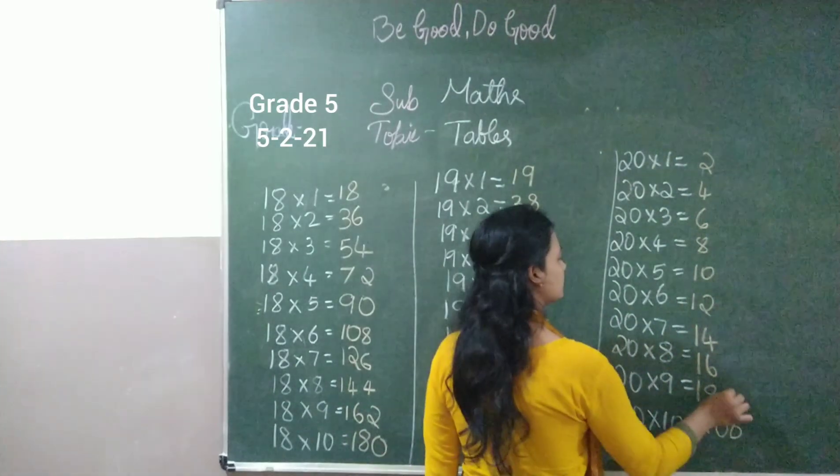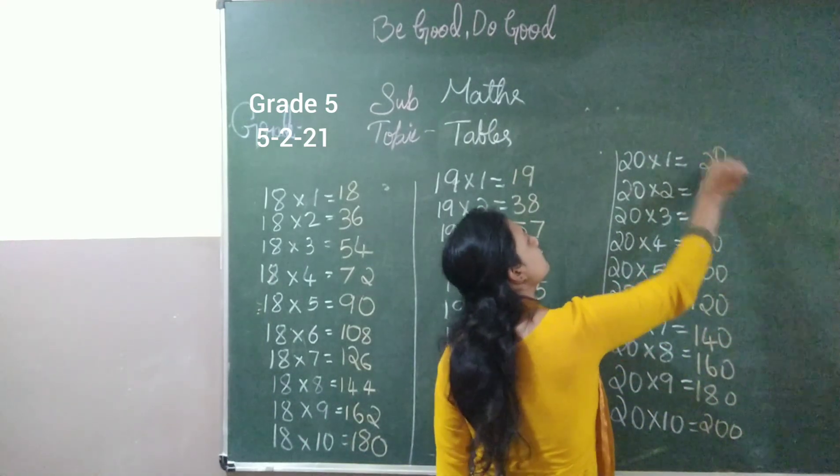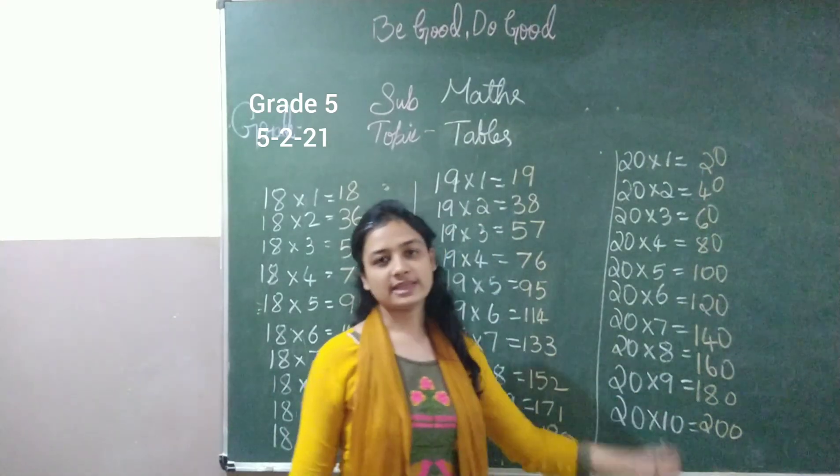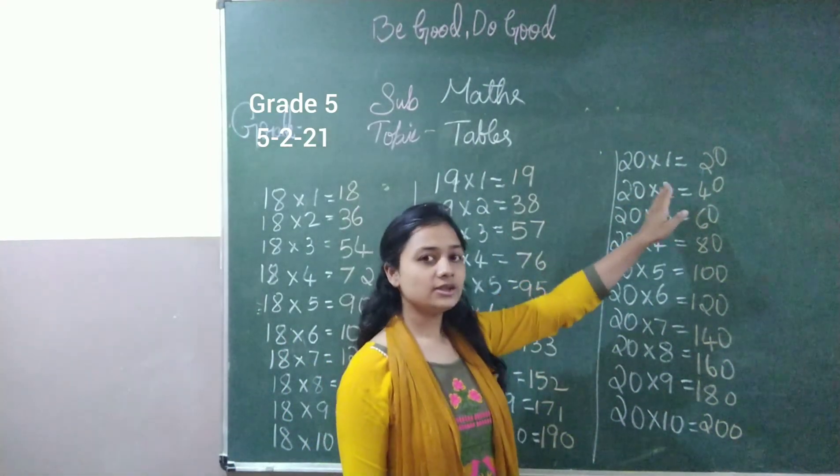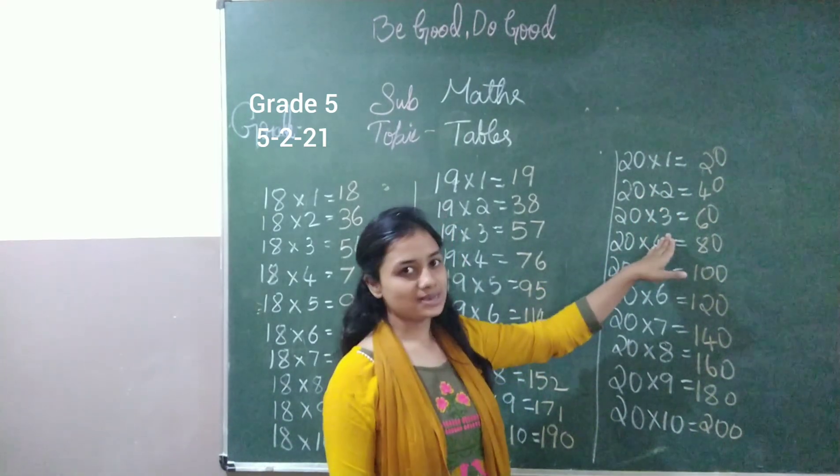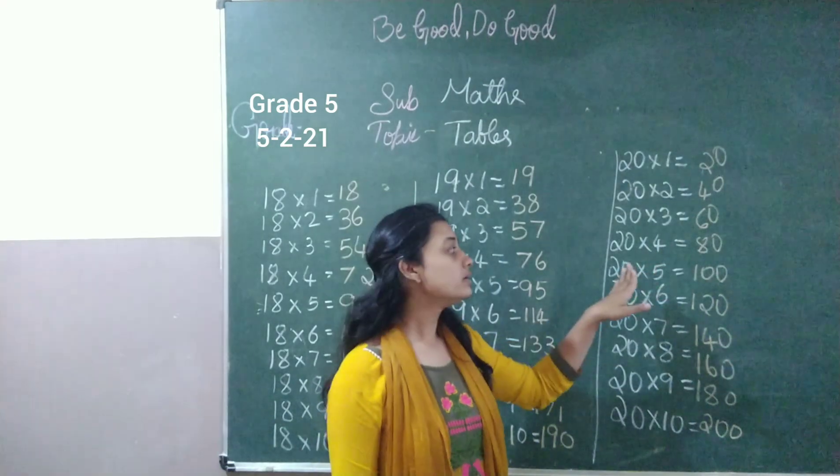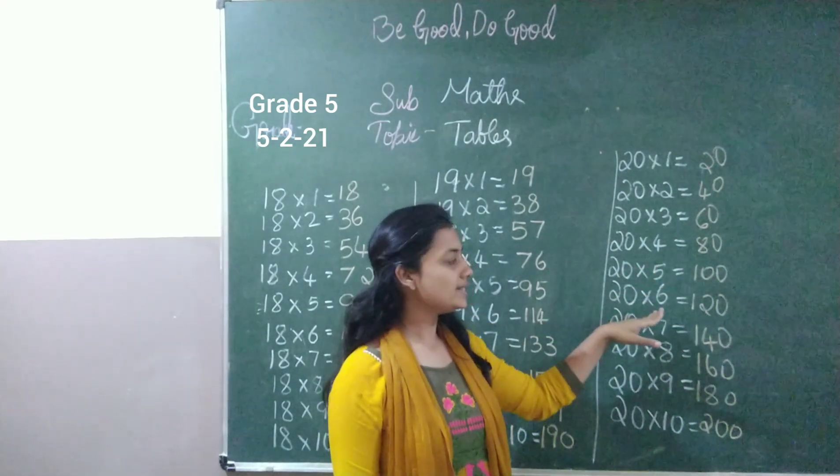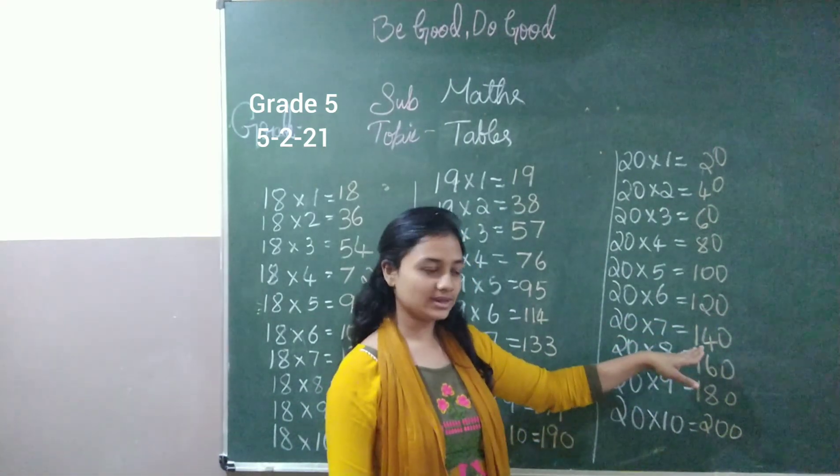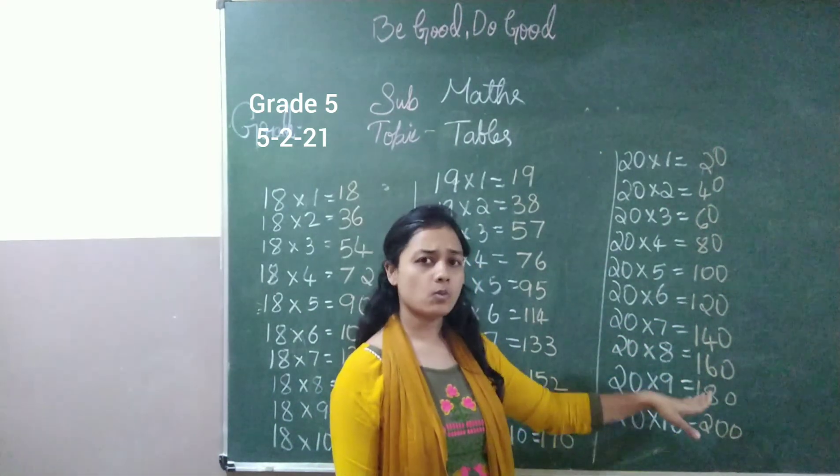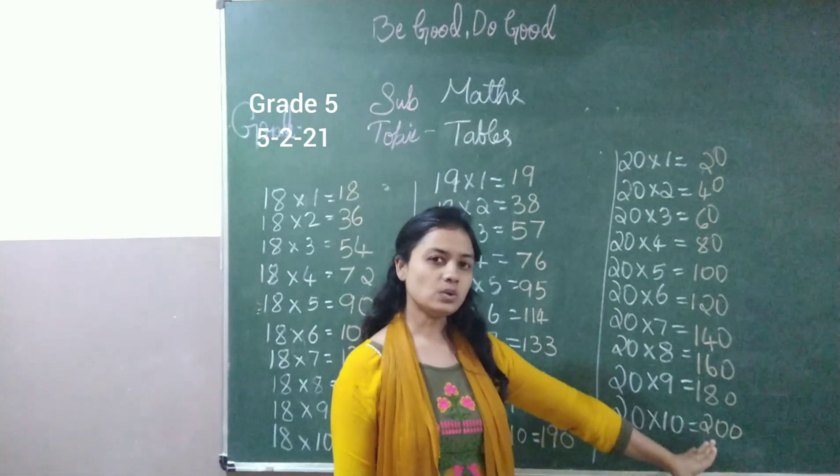Now let's add zeros here at last. So this will be 20 tables. So let's say every table now. 20 times 1 is 20, 20 times 2 is 40, 20 times 3 is 60, 20 times 4 is 80, 20 times 5 is 100, 20 times 6 is 120, 20 times 7 is 140, 20 times 8 is 160, 20 times 9 is 180, 20 times 10 is 200.